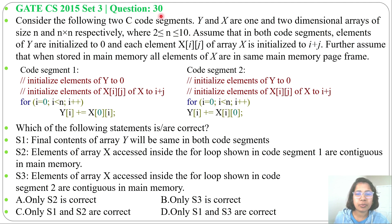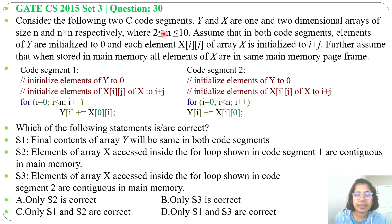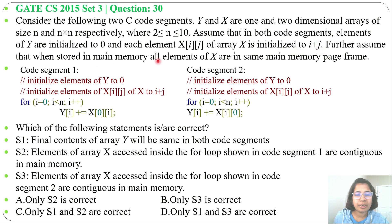Consider the following two C code segments. Y and X are 1-dimensional and 2-dimensional arrays of size N and N×N respectively. N ranges between 2 and 10 (greater than or equal to 2, less than or equal to 10). Assume that in both code segments, elements of Y are initialized to 0, and each element X[i][j] is initialized to i+j. Further, assume that when stored in main memory, all elements of X are in the same memory page frame.